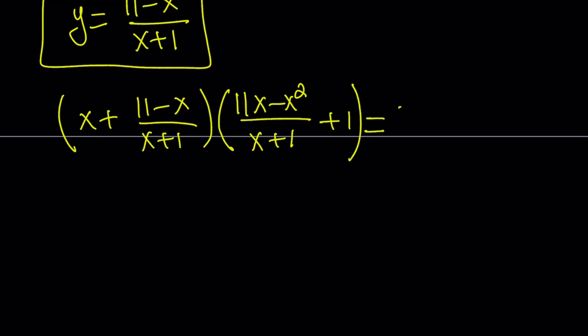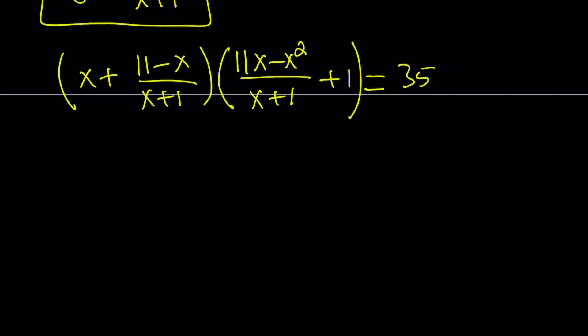And the product is equal to 35. So I'm going to go ahead and make a common denominator and simplify this expression. If you multiply x times (x+1), you get x²+x. x cancels out. You end up with (x²+11)/(x+1).